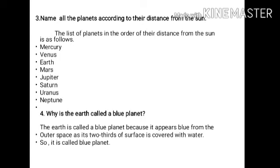Fourth question: why is the Earth called a blue planet? The Earth is called the blue planet because it appears blue from outer space, as two-thirds of its surface is covered with water. So it is called the blue planet.